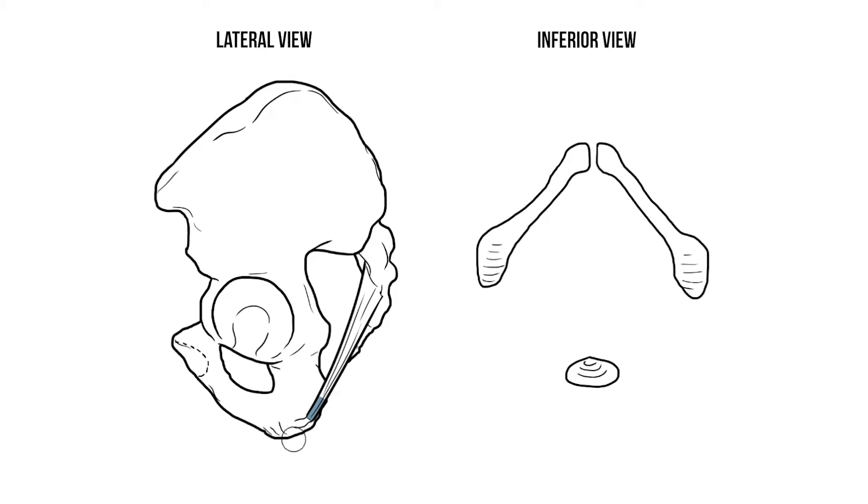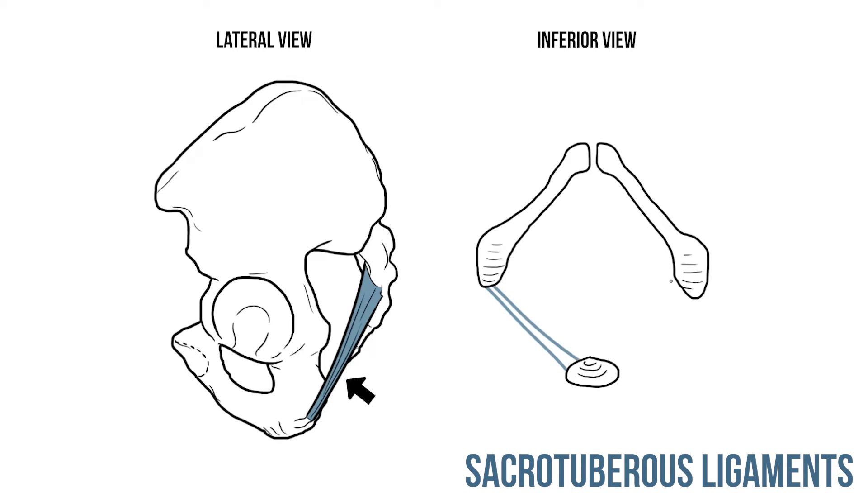Finally we need to add the ligaments that pass between the sacrum and the ischial tuberosities, known with characteristic creativity as the sacro-tuberous ligaments. These run on either side to form the diamond shaped boundaries at the perineum.